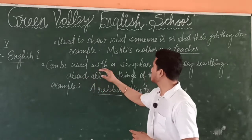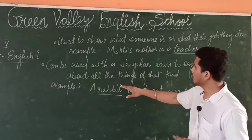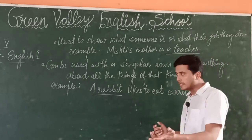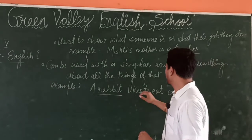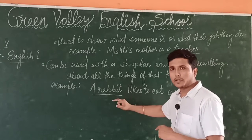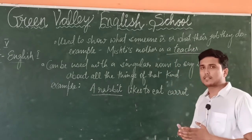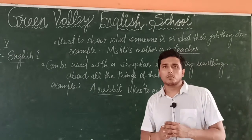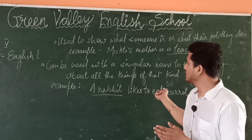The next condition is that a or an can be used with a singular noun to say something about all things of that kind. When we have to say something about one thing and about their kind — for example, 'A rabbit likes to eat carrots.' We are mentioning one rabbit here, but we are telling about all rabbits that they like to eat carrots. These are the conditions which come under the usage of a and an.